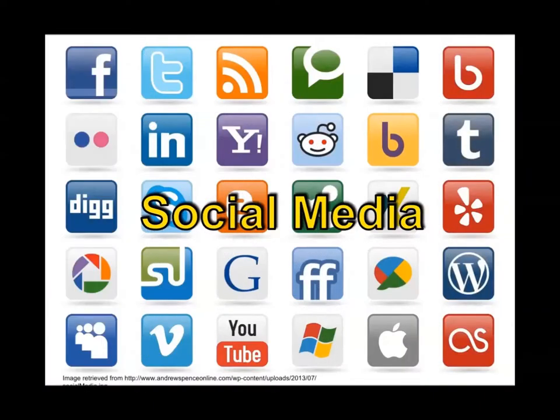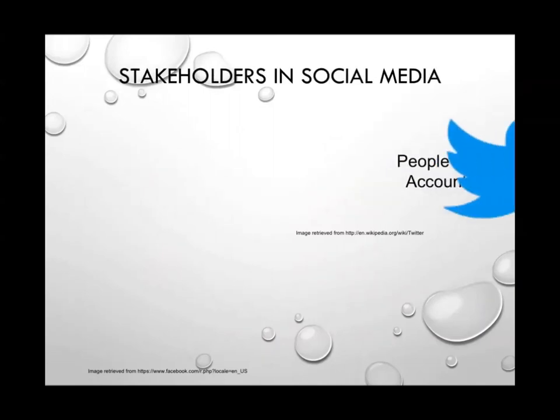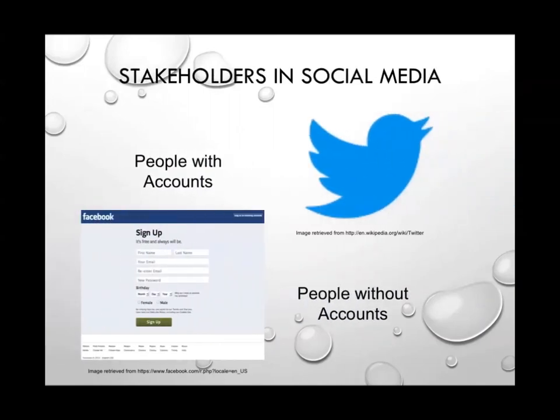First, we'll be looking at value-sensitive design in social media, focusing on the two biggest players: Twitter and Facebook. Direct stakeholders within Twitter and Facebook are people with accounts — users and companies involved in advertising on their applications. Indirect stakeholders are people without accounts, because sometimes pictures and videos are uploaded of you, even if you do not own an account.